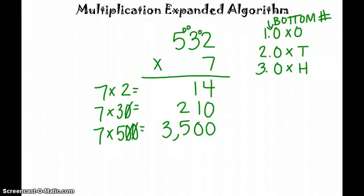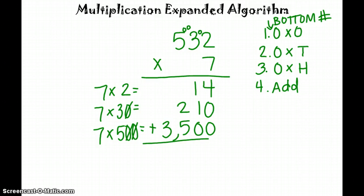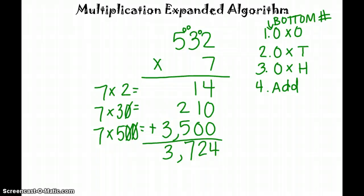Now we have multiplied across the ones, across the tens, and across the hundreds. So our last step is to add all of those parts together. This is why it's important to line up our places as we multiply. So 4 plus 0 plus 0 is 4. 1 plus 1 plus 0 is 2. 2 plus 5 is 7. Make sure our comma's there. And we have 3 in the thousands place. So 532 groups of 7 is 3,724, or 532 times 7 equals 3,724.